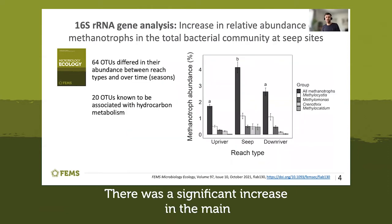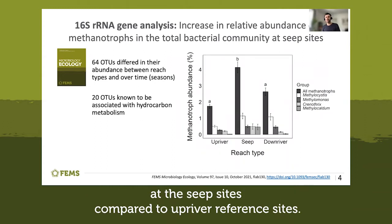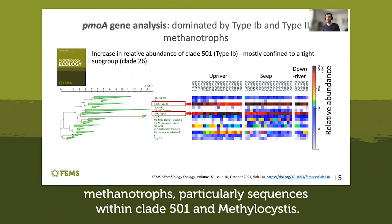There was a significant increase in the mean relative abundance of methanotrophs in the total bacterial community at the seep sites compared to upriver reference sites. The methanotroph communities across all samples were dominated by type 1b and type 2 methanotrophs, particularly sequences within clade 501 and Methylocystis.